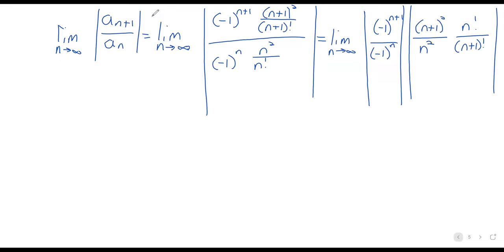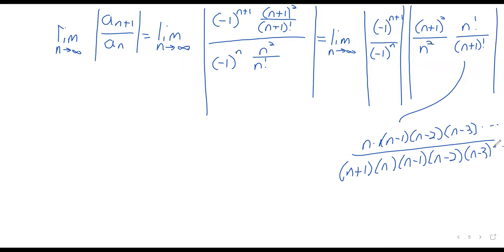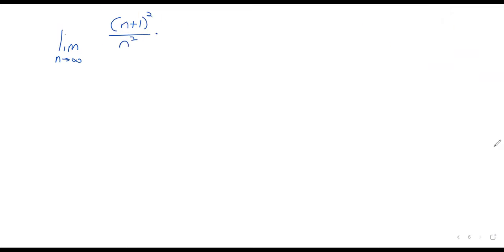And just because we've seen this like four separate times by now. So this is n times n minus one times n minus two times n minus three and so on. In the bottom, we've got n plus one times n times n minus one times n minus two times n minus three and so on. Everything cancels except that n plus one.